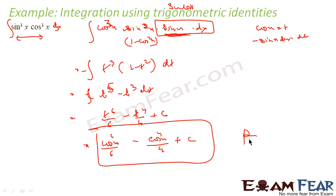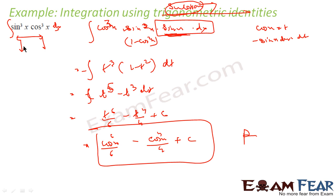So t = cos x gives: cos⁶x/6 - cos⁴x/4 + c. Why I chose substitution: given a choice between trigonometric and substitution approach, use substitution because it is simpler. You can use the trigonometric approach too — you know the formula for sin³x and cos³x — but substitution is more direct here.